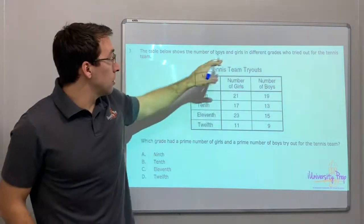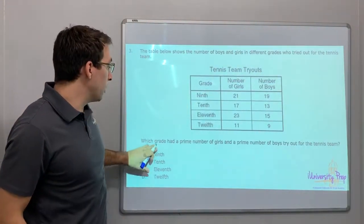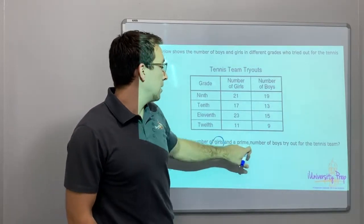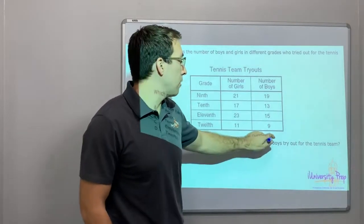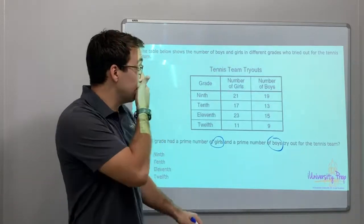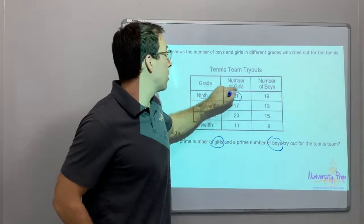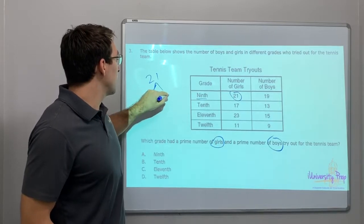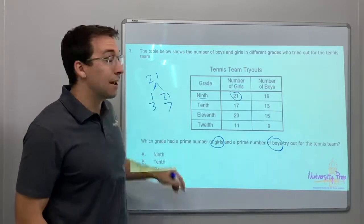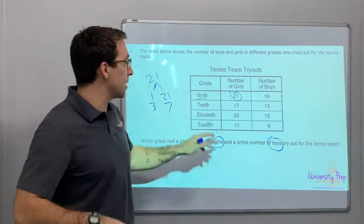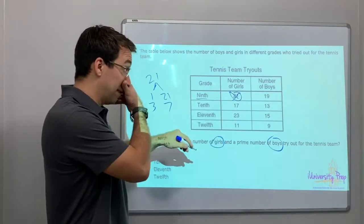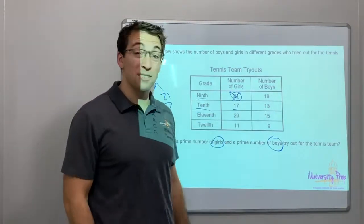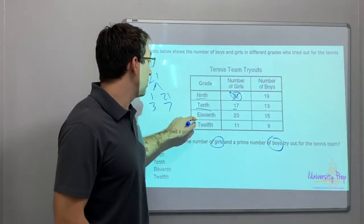These are the boys and girls that tried out for the tennis team. Which grade created a prime number of girls and a prime number of boys? 9th grade has 21 — 21 equals 1 times 21 and 3 times 7 — that's not a prime number. 10th grade has 17 and 13; I think those are prime.